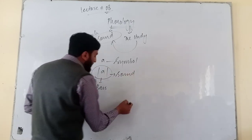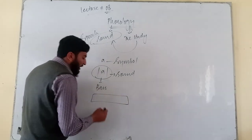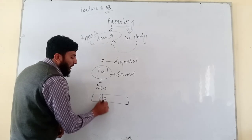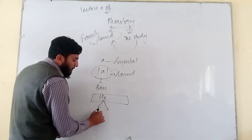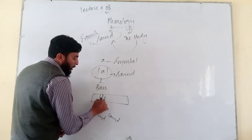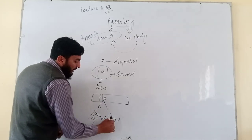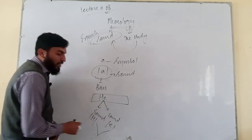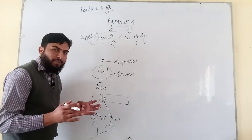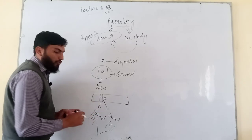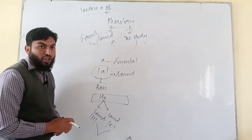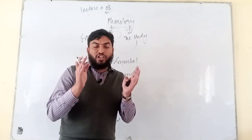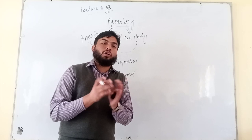Now when we combine sounds, take the word HE. HE is a word — how is this word formed? It is formed from sounds. H has one sound and E has another sound. When we combine these two sounds, they form a word. This is called phonology: the study of the formation and combination of sounds.